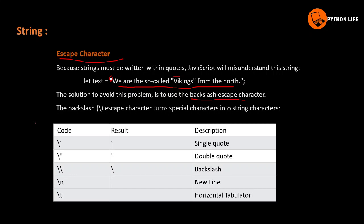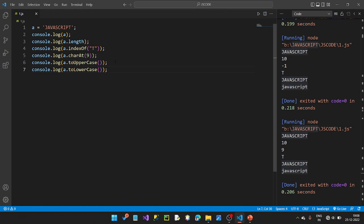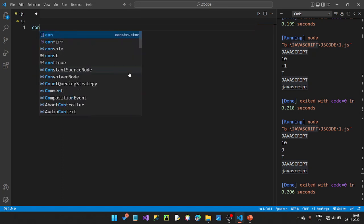There are some types: the backslash single quote uses a single quote, double quote uses a double quote, and backslash backslash produces one backslash in the output. Slash n is a new line. Slash t adds a tab space for the data. So we have to practice — let's see here in console.log.